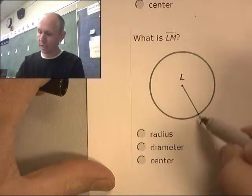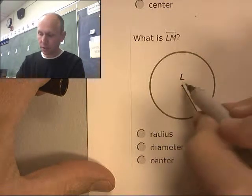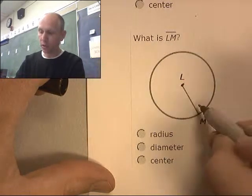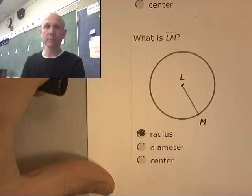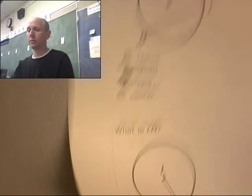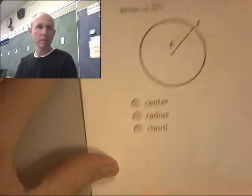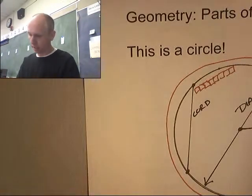What is this segment from L to M, this distance? It does go through the center, but it only goes to one edge. That's a radius. And this looks like another radius.